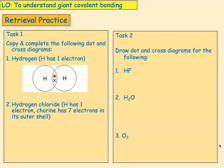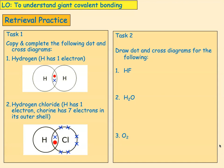Hydrogen chloride: hydrogen has one electron in its outer shell and chlorine has seven. Chlorine needs one more to fill its outer shell and hydrogen needs one more. So you have got one covalent bond.